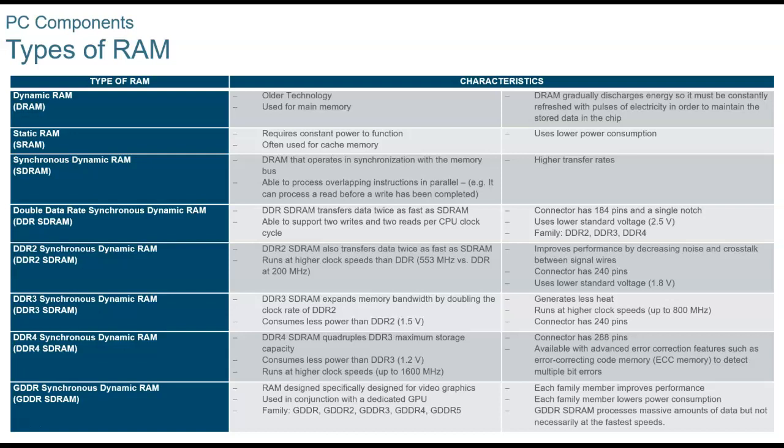DDR-SDRAM transfers data twice as fast as SDRAM. DDR2-SDRAM also doubles the speed and runs at a higher clock speed. DDR3-SDRAM expands bandwidth, has 240-pin connectors, and generates less heat. DDR4-SDRAM quadruples DDR3's maximum storage capacity, consumes less power, and has 288 pins. GDDR-SDRAM (Graphics DDR Synchronous Dynamic RAM) is designed specifically for use with video graphics.